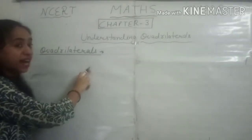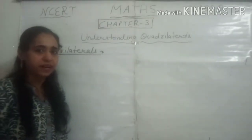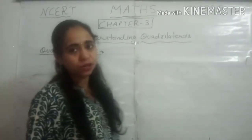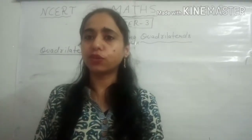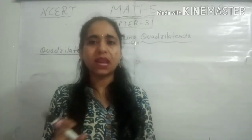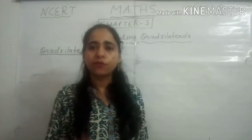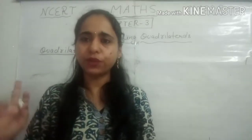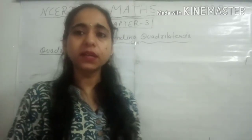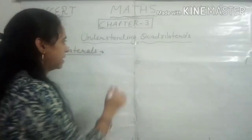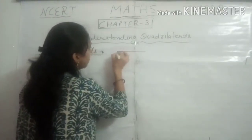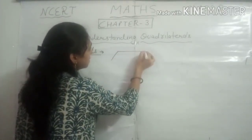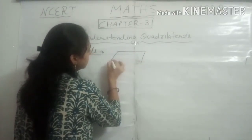The topic we are going to discuss is quadrilaterals. From the introduction, quadrilaterals have four sides. This is the diagram of quadrilaterals.